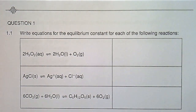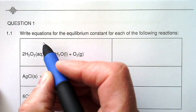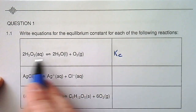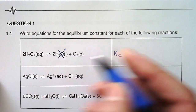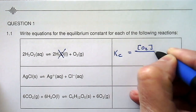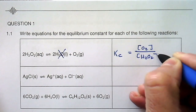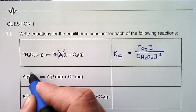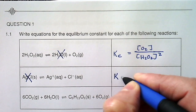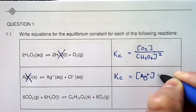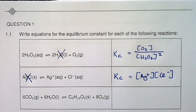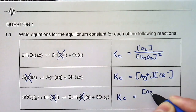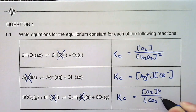Let's practice writing Kc expressions for some reactions. For the first one: liquid does not come into the expression, so we have O2 as product divided by reactant H2O2, and the coefficient two in front becomes a square. Next: a solid has a concentration of one and doesn't come into the Kc expression, so the Kc expression is just [Ag+][Cr-] concentrations. For the third: no liquids, no solids, so Kc equals [O2] to the sixth divided by [CO2] to the sixth.